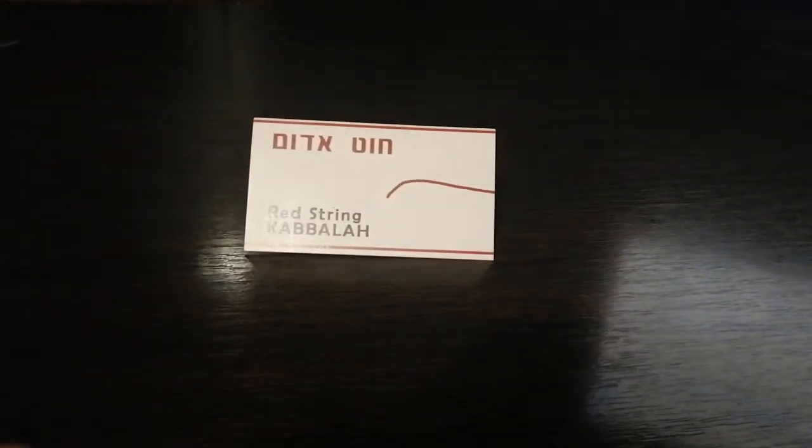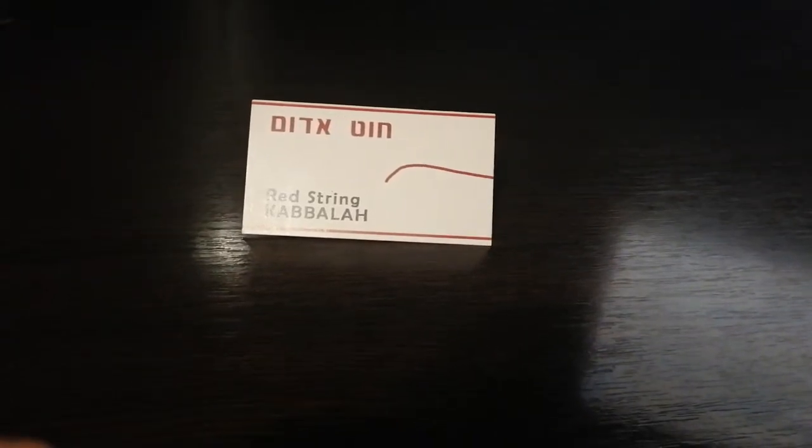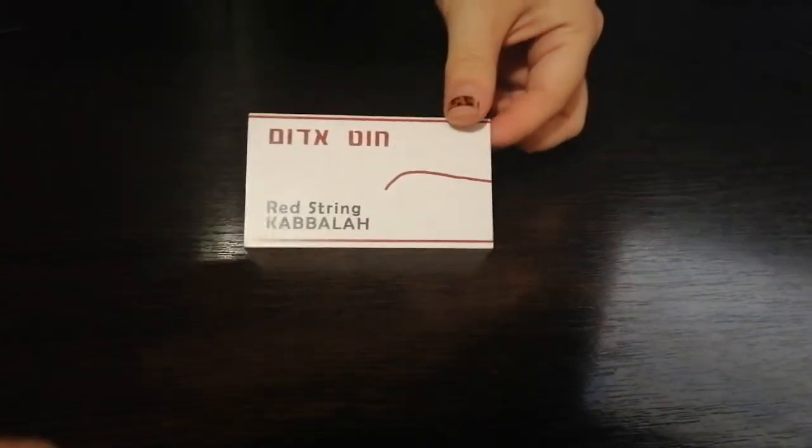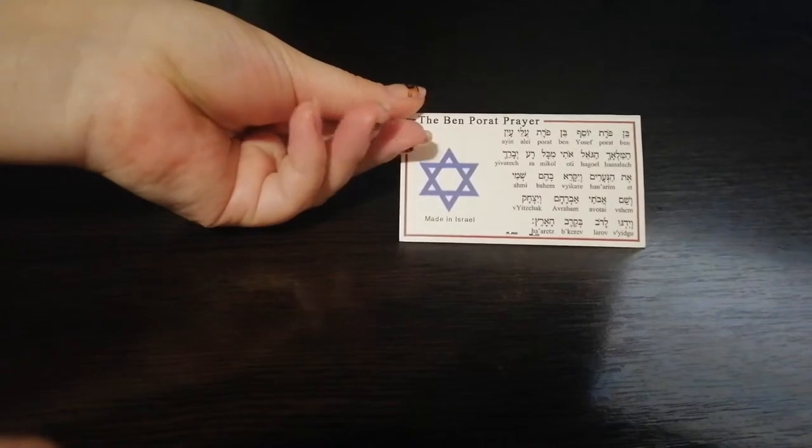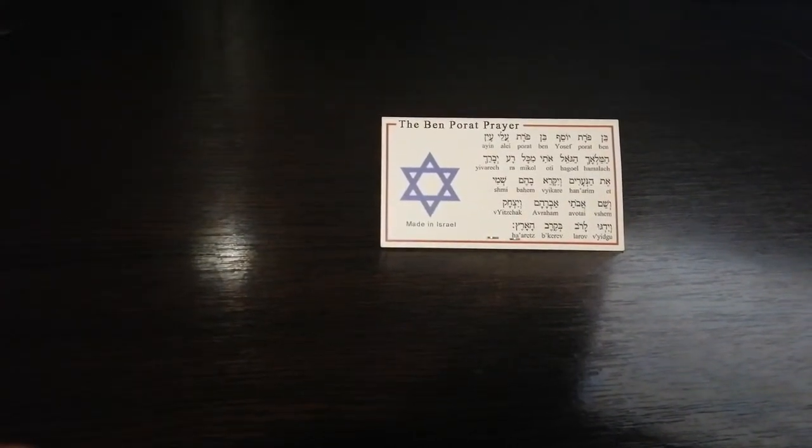A tool for protection, the red string is used for protection against what the Zohar terms the evil eye. The Zohar says that the eyes are the window of the soul and therefore can transmit tremendous energy when we look at others.